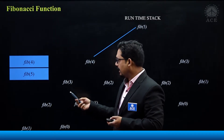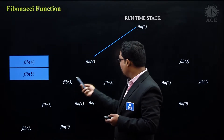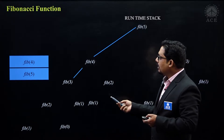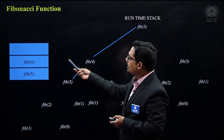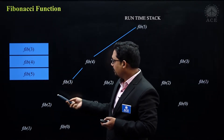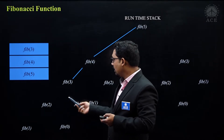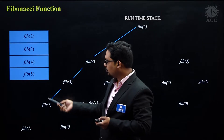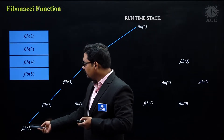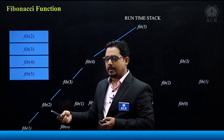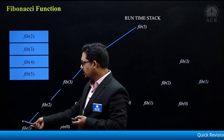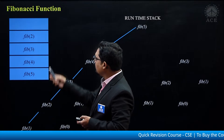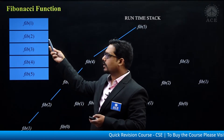This is our runtime stack. Fib4 is going to call Fib3 and Fib2, but first it will call Fib3, and Fib3 will be pushed into the stack. Fib3 is going to call Fib2 and Fib1. So again the call for Fib2 is made and activation record for Fib2 will be pushed. Then Fib2 will call Fib1, which will reach the base condition and terminate immediately, but there will be one activation record for Fib1.